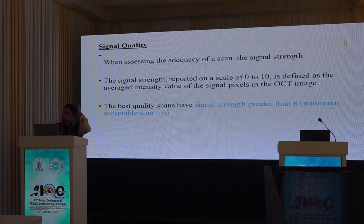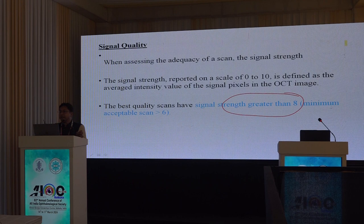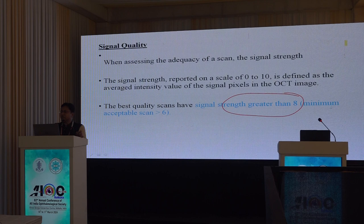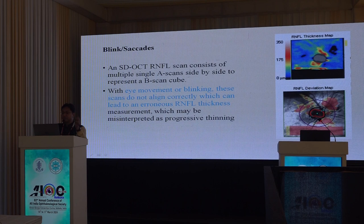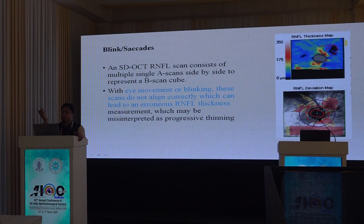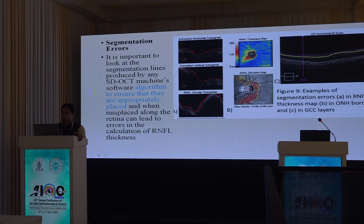Signal strength is important. Recommended signal strength is 8 or above; minimum acceptable is more than 6. Below 6, data will show abnormalities everywhere and is unreliable. Always check signal strength on each printout before interpreting. Poor signal may result from blinking or eye movement during the scan.